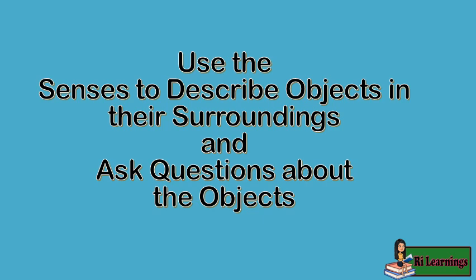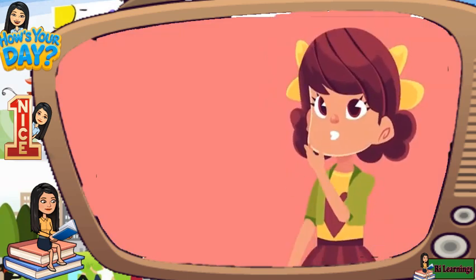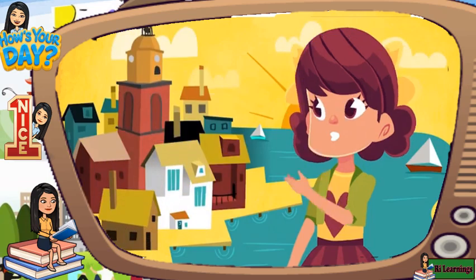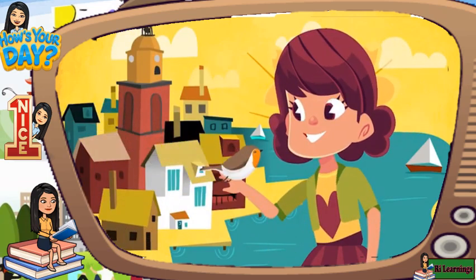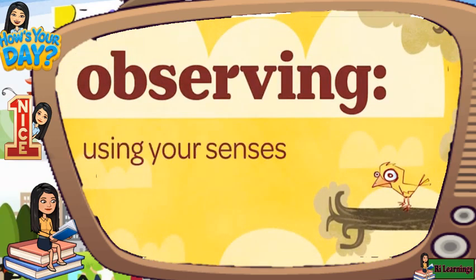Use the senses to describe objects in their surroundings and ask questions about the objects. People are curious by nature. They want to know things about the world around them. People can learn about the world by making observations. Making observations, or observing, means using your senses to notice things.